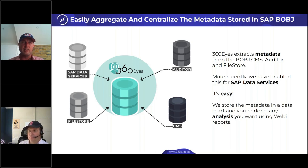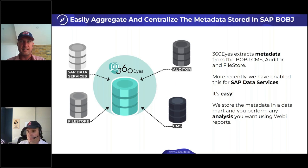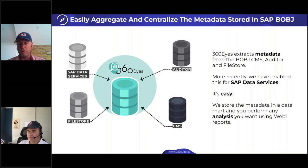We extract metadata from the system database, the audit database, and the BusinessObjects file store - meaning we actually open the WebI reports, Lumiras, Crystal, and universes. We open these objects, extract the metadata, save it to your database of choice on-premise, and then you use WebI to do analytics. The latest addition - released only a few weeks ago - is the ability to do the same with Data Services. For Data Services developers, you'll know how difficult it is to explore projects, workflows, and data flows. Now 360 Eyes can do that. The second part of today's session is about leveraging all of it together: BusinessObjects metadata combined with Data Services metadata.